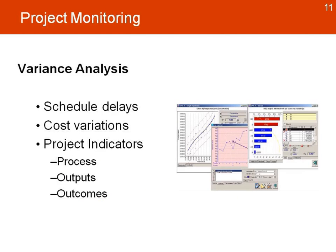Variance analysis is the idea that we need to look at changes — both in the schedule, if there are any delays, and variations in cost that could be caused by changes in prices or the cost of goods over time. We also look at key project indicators to see their variances, examining our process, outputs, and outcomes.